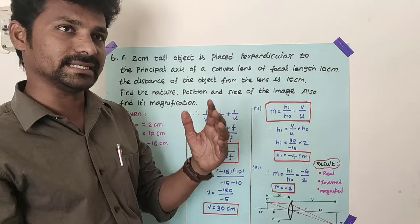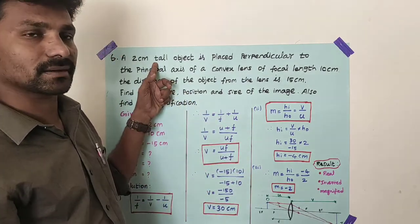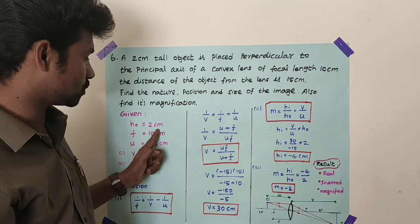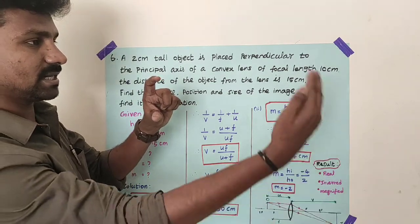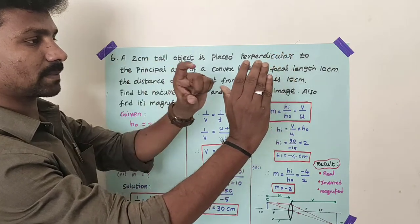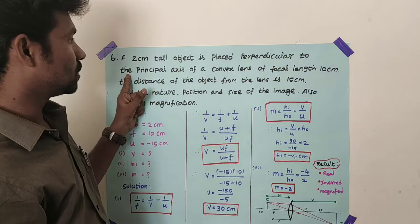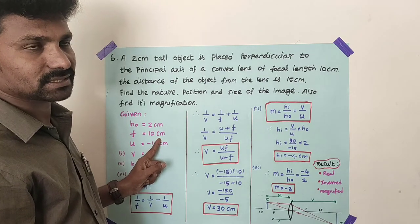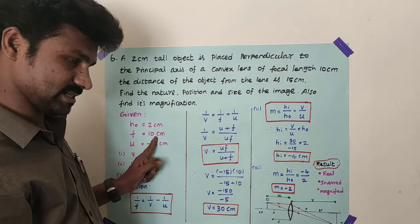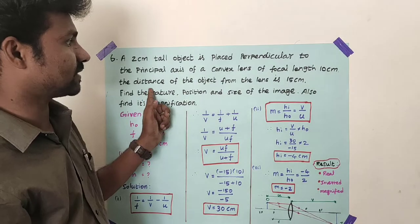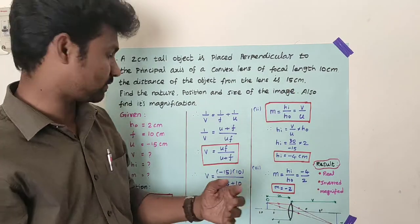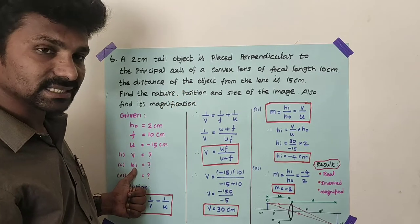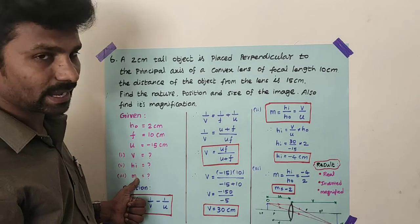In this question, the height of the object, denoted by h₀, is equal to 2 centimeter. The object is placed perpendicular to the principal axis of a convex lens. The focal length is given as plus 10 centimeter — positive because it is a convex lens. The object distance u is given as 15 centimeter, and since object distance is always negative, u equals minus 15 centimeter. We need to find image distance, height of the image, and magnification.